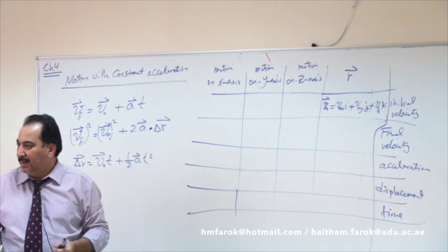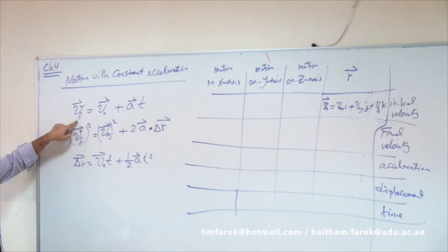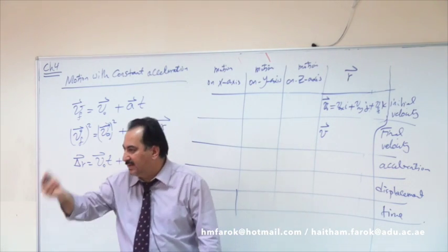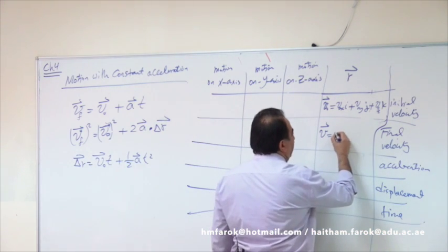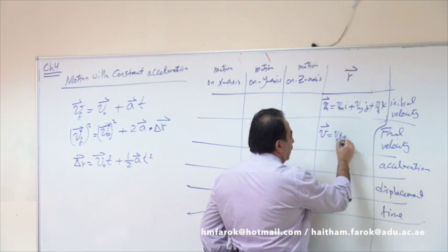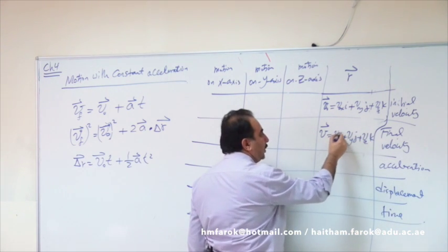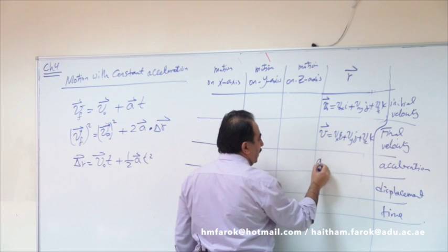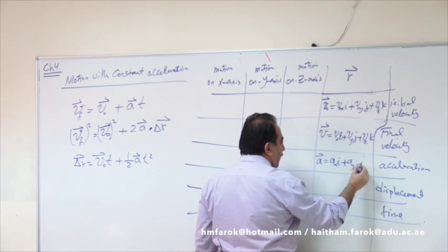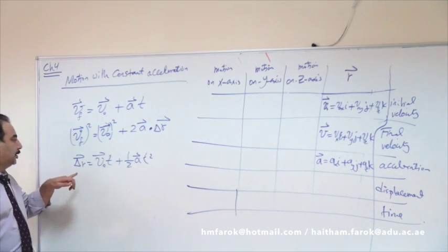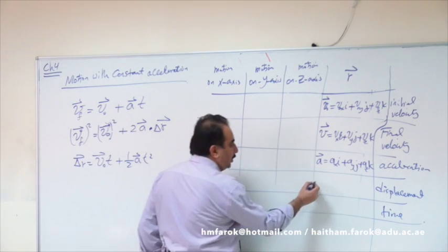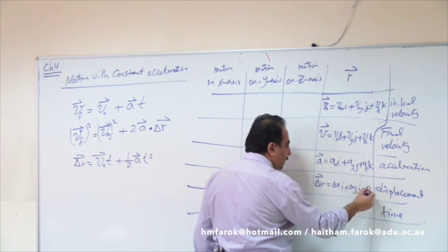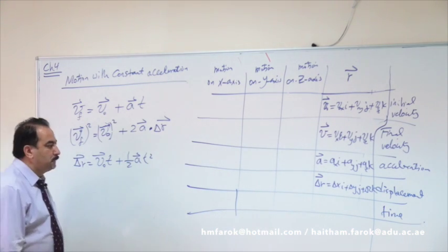Final velocity is the same: V final equals Vx î plus Vy ĵ plus Vz k̂ — three components. Acceleration also has three components: acceleration in x, y, and z. Displacement Δr has displacement in x, displacement in y, and displacement in z. Time is just time — there's no tx, ty, tz. Time is the same across all columns.